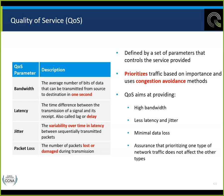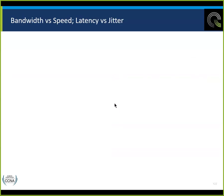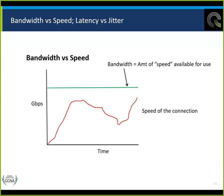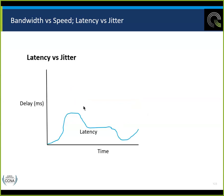Here's an attempt at bandwidth versus speed. The bandwidth is the amount of data rate available — the speed of the connection over time. Latency is the delay that goes on, and jitter is the inconsistency in the latency. If we have a standard or continuous delay, it's not going to affect the quality — it may affect the timing, but not the quality.